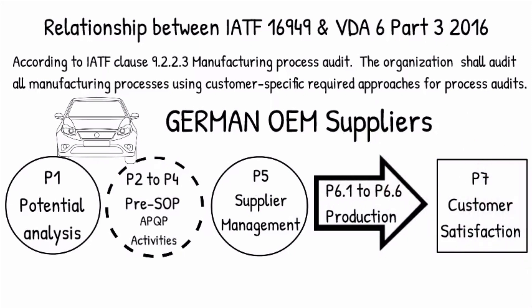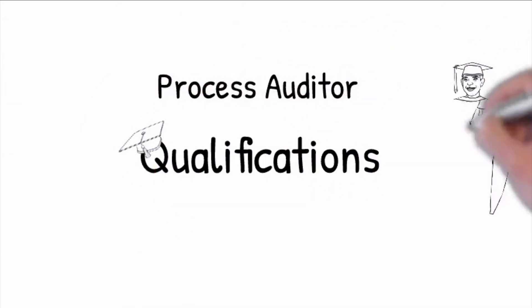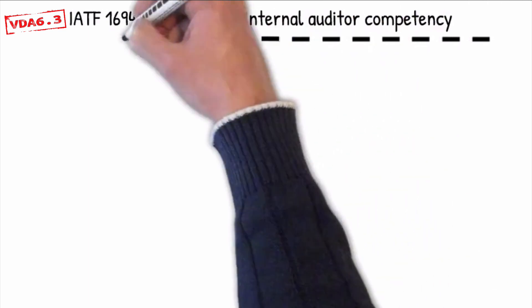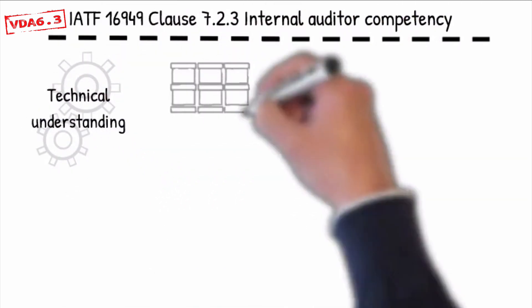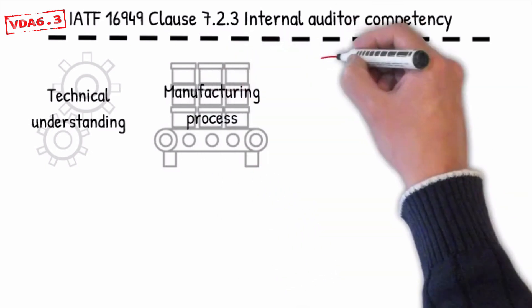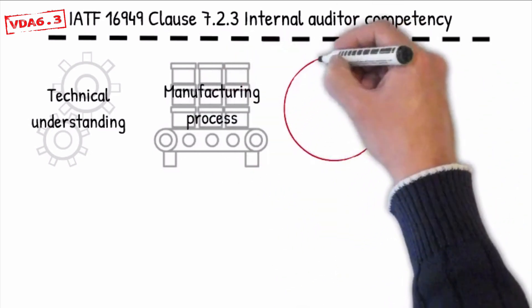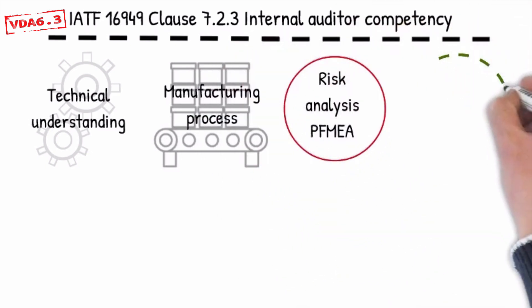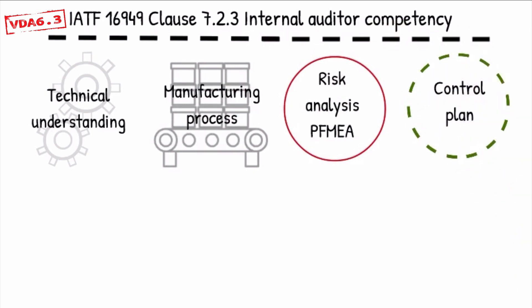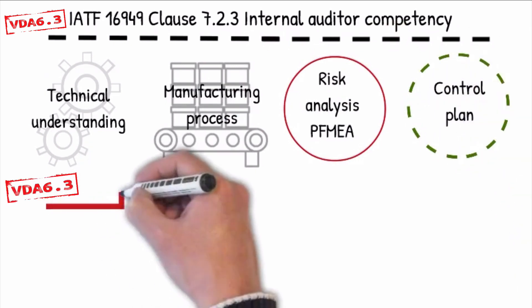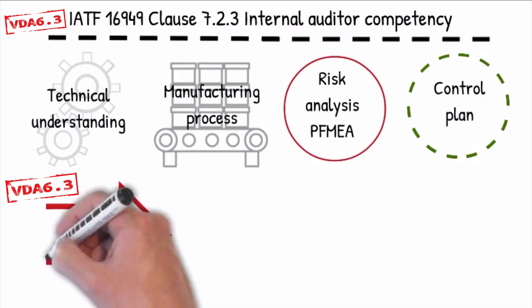The process auditors should have the following qualifications according to IATF 16949 and VDA 6.3. Manufacturing process auditors shall demonstrate technical understanding of the relevant manufacturing process to be audited, including the process risk analysis FMEA and the control plan.